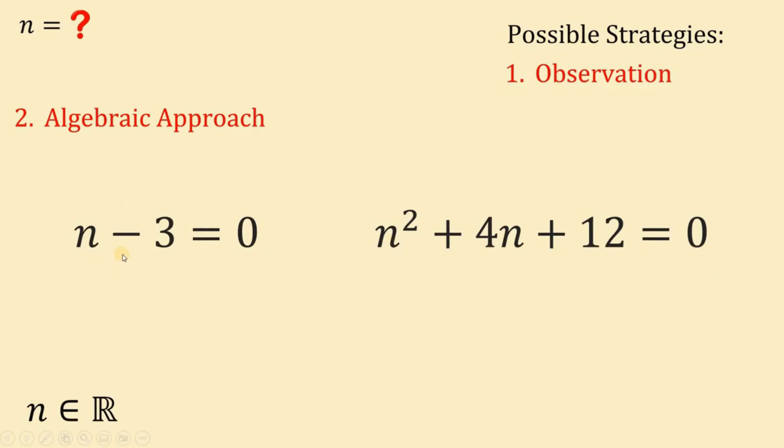On the first equation, if we add 3 on both sides, we get that the value of n must be equal to 3. And we get this value using observation. And we know that n must be equal to 3 is correct. Now, how about on this factor n squared plus 4n plus 12? Do we get a real value for n in this equation?